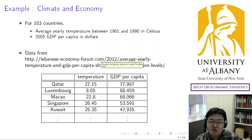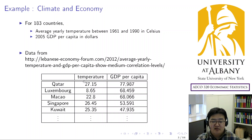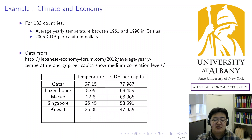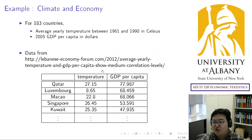From the data, just to list a few, the countries at the top of GDP per capita are Qatar, which has the highest, followed by Luxembourg, Macau, Singapore, and Kuwait. We also observe their average temperature. Qatar, Macau, Singapore, and Kuwait are hot countries with average temperature above 20 degrees, while Luxembourg has a temperature lower than 10 degrees. So what kind of relationship is there between average temperature and GDP per capita?